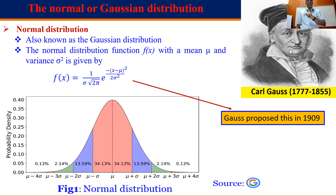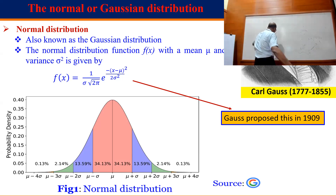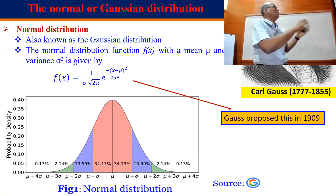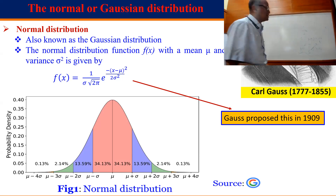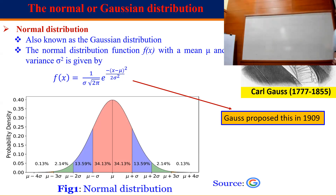The normal distribution f(x) with mean μ and variance σ² is the starting point of all probability, statistics, a lot of data science, and a lot of machine learning. There are non-Gaussian distributions too, but the very fact that we call others 'non-Gaussian' rather than 'non-binomial' shows how much importance we attach to the Gaussian.